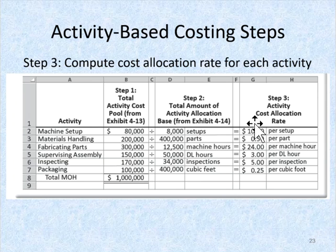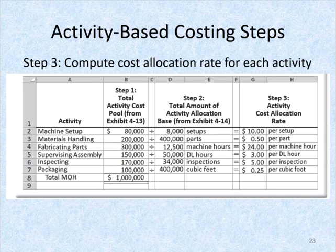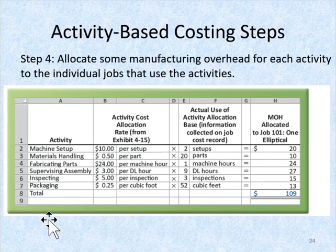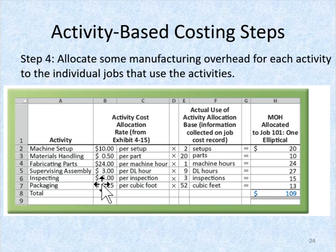Now we have a cost allocation rate for each and every activity. We can then multiply it out for each specific job. For example, to manufacture one elliptical: it takes $10 to set up the machine and there are two setups required, so that would be $20.